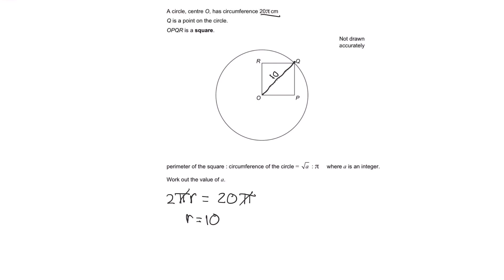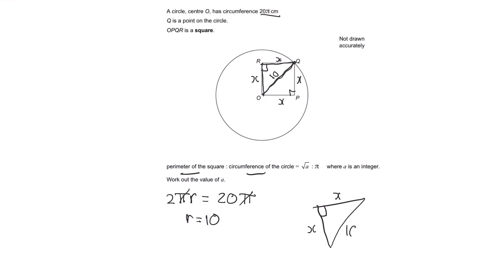This helps us immensely because we now look at the ratio of the perimeter of the square to the circumference of the circle. We don't currently have the perimeter of the square, but we can find it. If we call the side length of the square x, and split the square into a triangle using the diagonal OQ, notice it's a right-angle triangle because the square has right angles. We can use Pythagoras' theorem to find x.